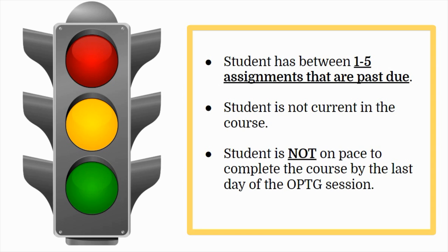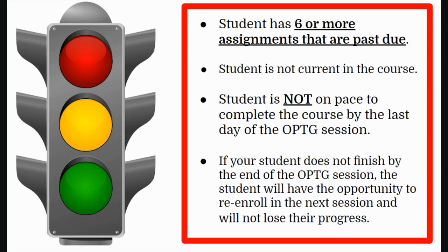If you see a yellow light status here, this means that between one and five assignments are past due and your student is behind in the course. If you see a red light status for your student, this means the student has six or more assignments that are past due. The student is not current in the course and is not on pace to complete the course by the last day of the OPTG session.